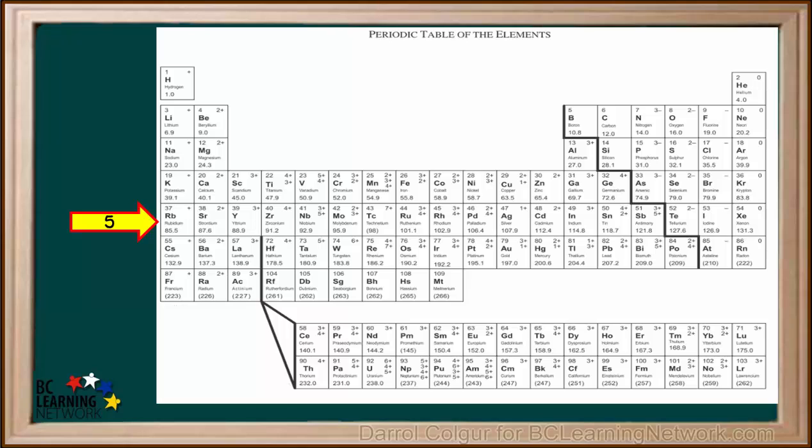The fifth period, called Period 5, contains elements 37 to 54, rubidium to xenon. Count the number of elements in Period 5. You'll see there are also 18.